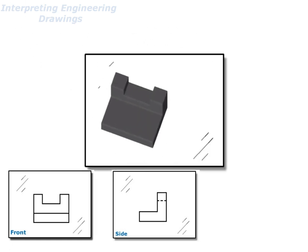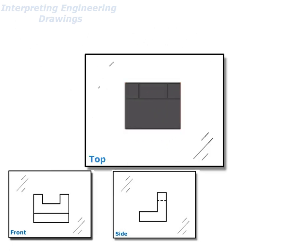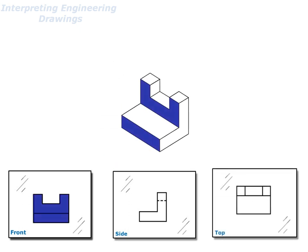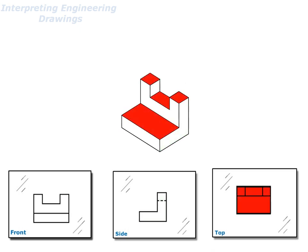Let's select View C to trace the top view of the object. We can show all of the features of this object with three views: the front view, the side view, and the top view.